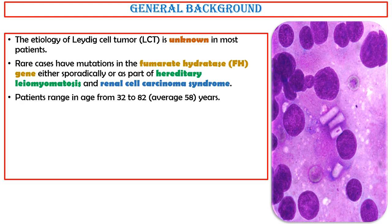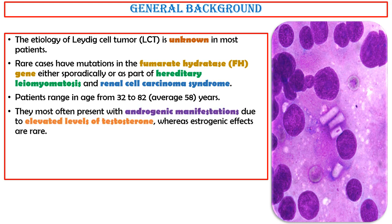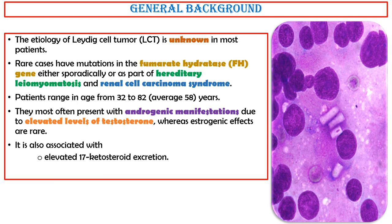Patients range in age from 32 to 82, average 58 years. They most often present with androgenic manifestations due to elevated levels of testosterone, whereas estrogenic effects are rare. It is also associated with elevated 17-ketosteroid excretion and responsiveness to cortisol suppression.